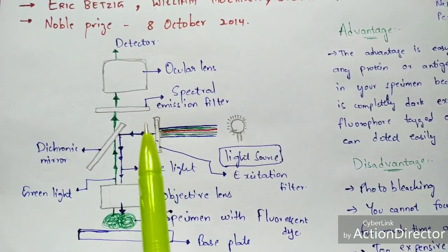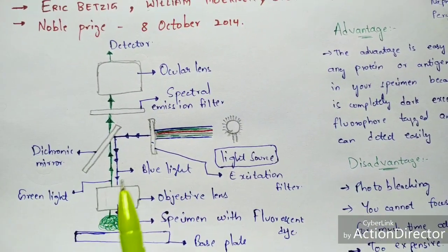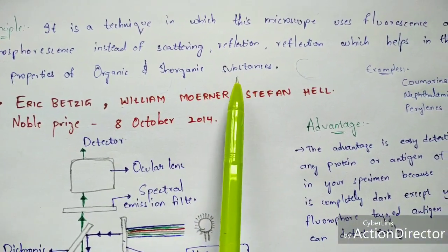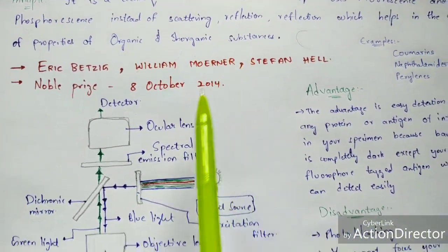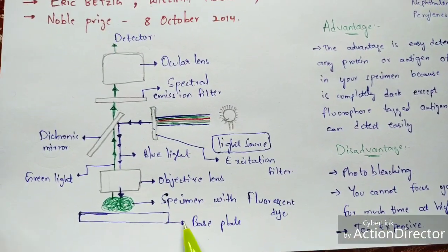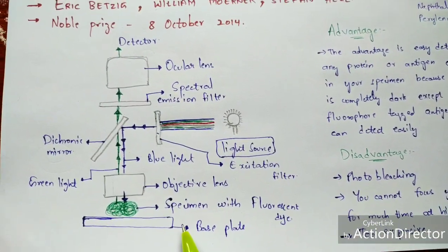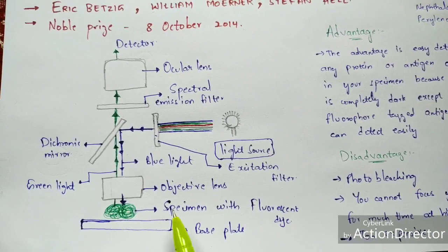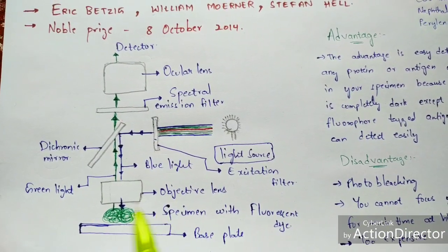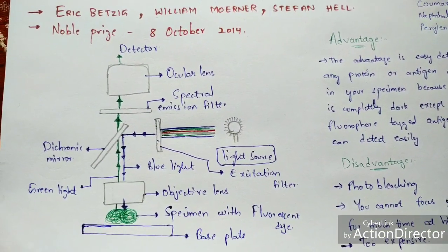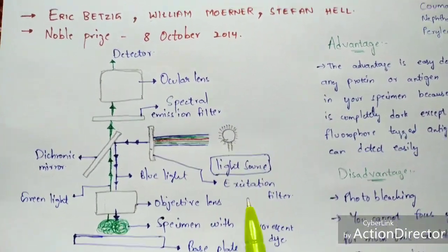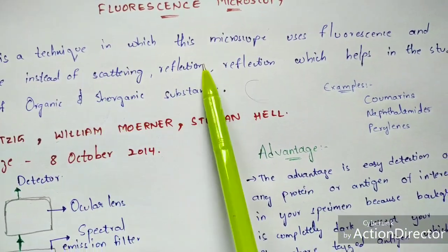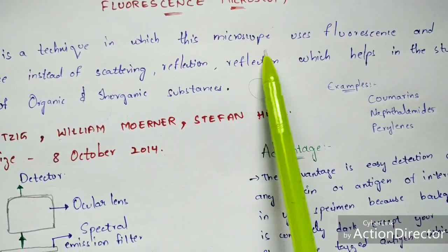Organic and inorganic substances can be studied when placed upon the base plate of the microscope. Upon this base plate, the specimen will be placed, and make sure that the specimen is mixed with a fluorescent dye.